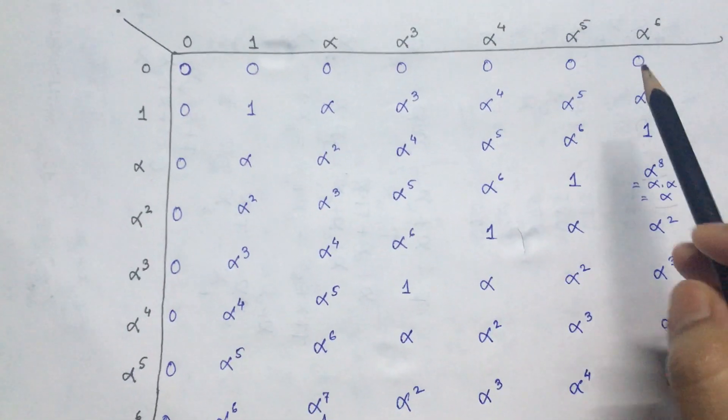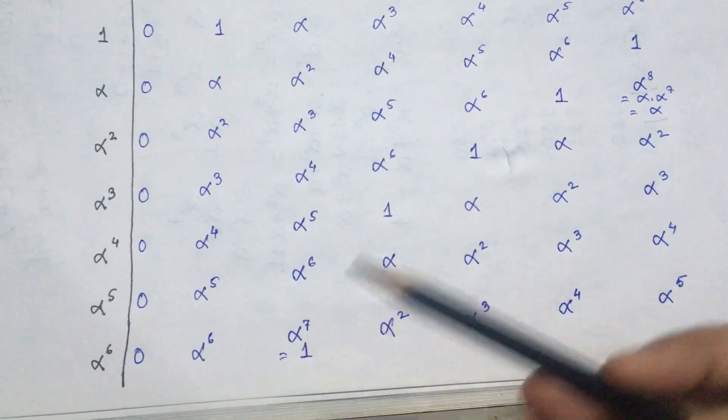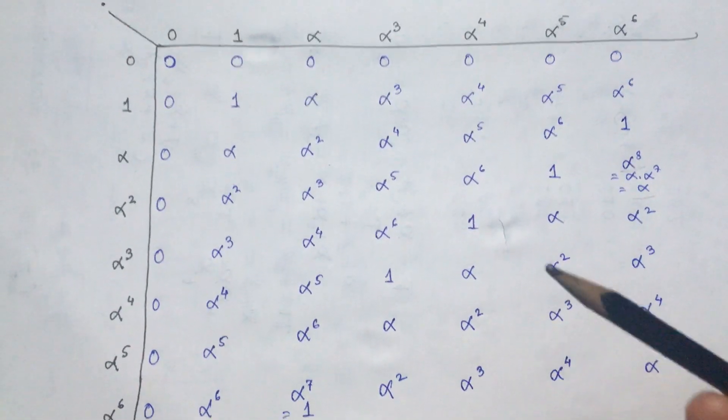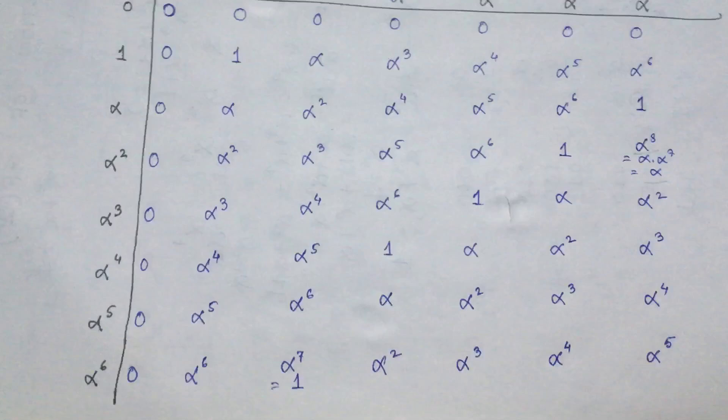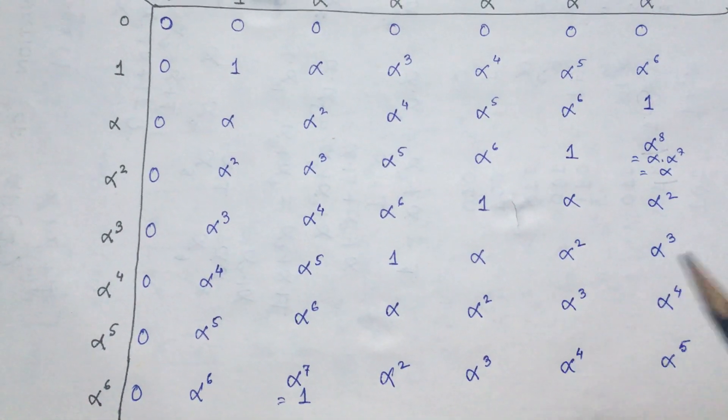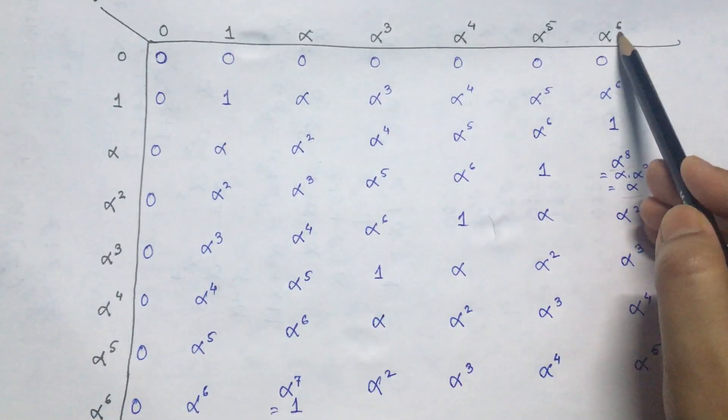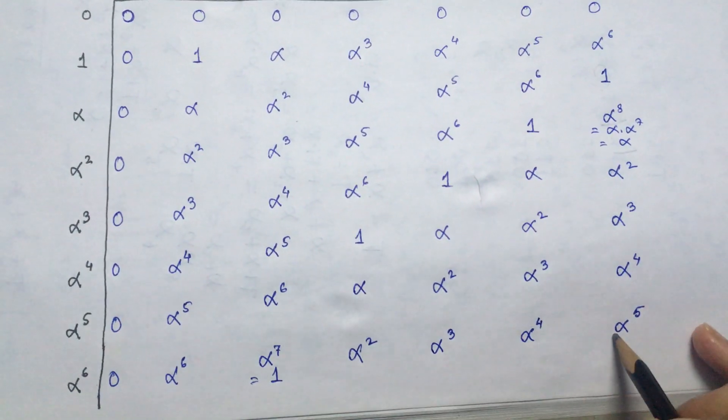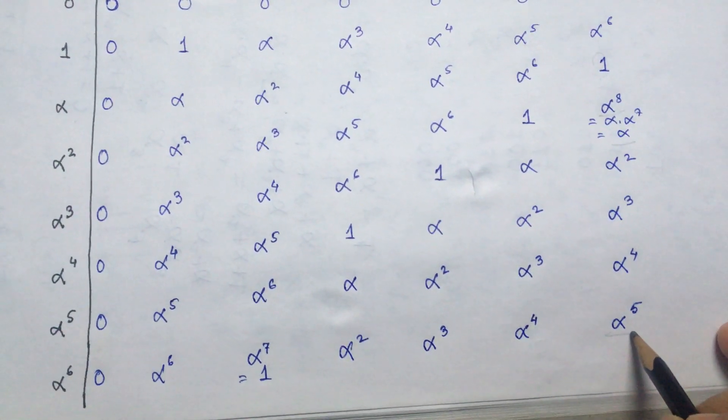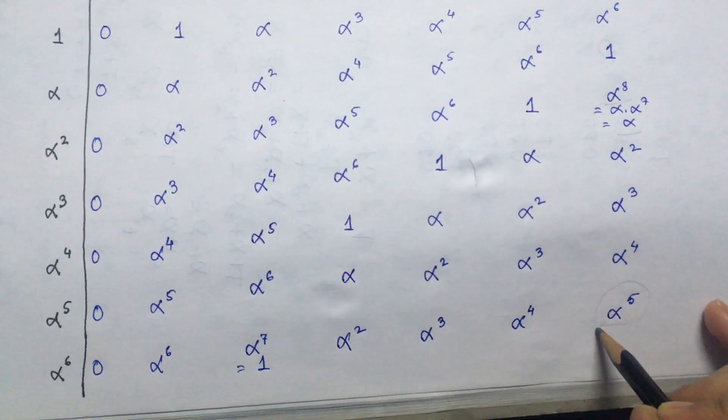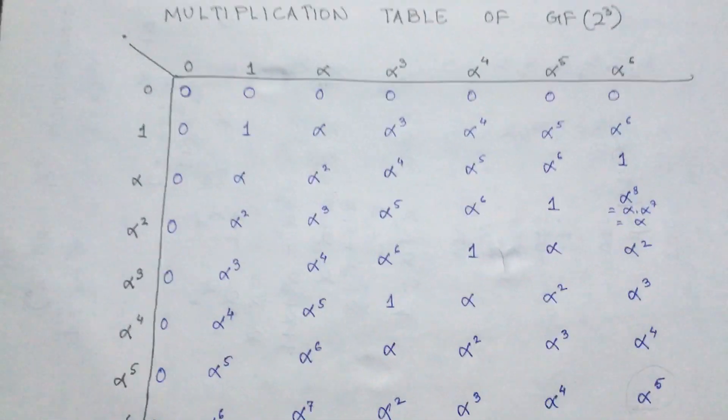So this is how we can construct the multiplication table, and once wherever we have any power of alpha that is greater than 6, we simply substitute it using the equation alpha to the power 7 is equal to 1. We can see over here alpha to the power 6 into alpha to the power 6, that is supposed to be alpha to the power 12, which can be written as alpha to the power 7 into alpha to the power 5. Since alpha to the power 7 is 1, we get the result as alpha to the power 5 over here.